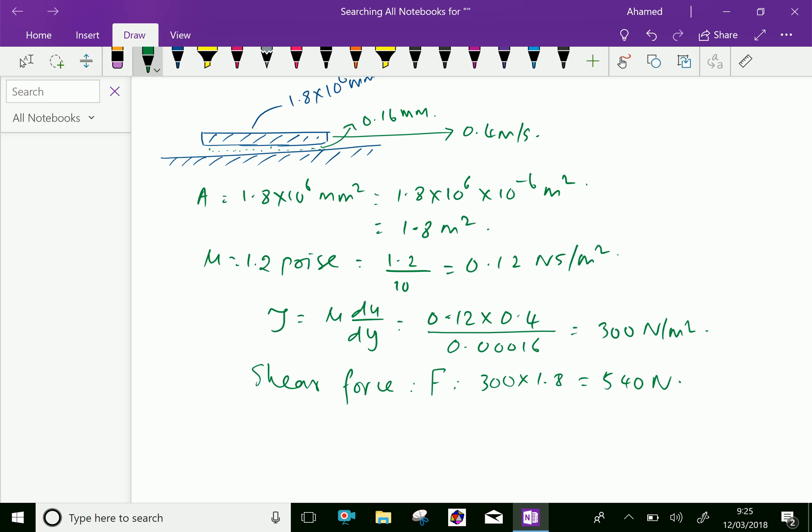Therefore, power required to move the plate with the given velocity of 0.4 meter per second is F into velocity, which is equal force 540 multiplied by the velocity 0.4 meter per second.